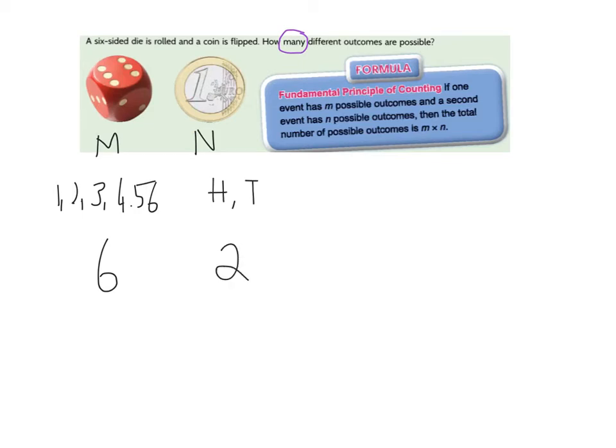The fundamental principle of counting just states that we multiply one event, the outcomes of it, by the second event. So m multiplied by n. So m was six, and n was two. If we multiply them, there are 12 outcomes.